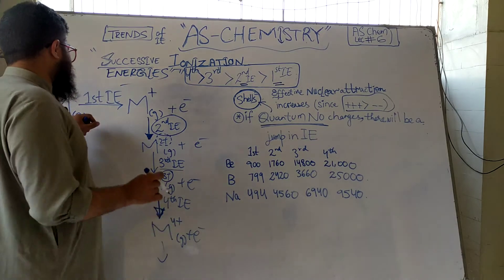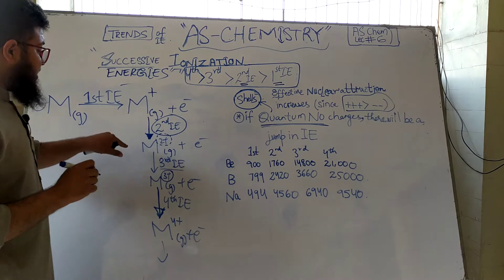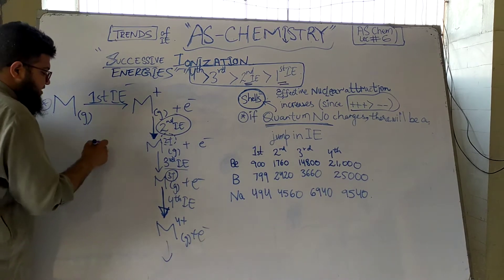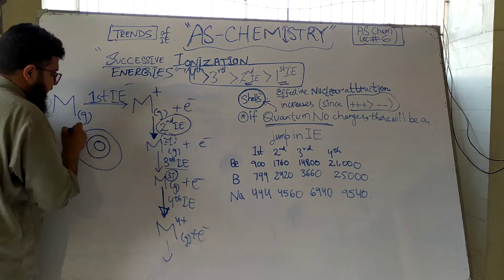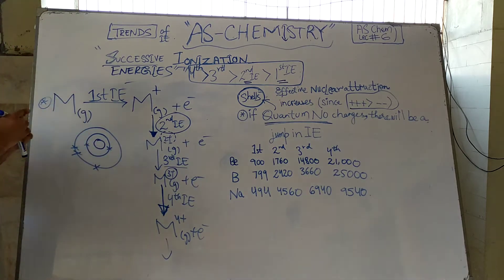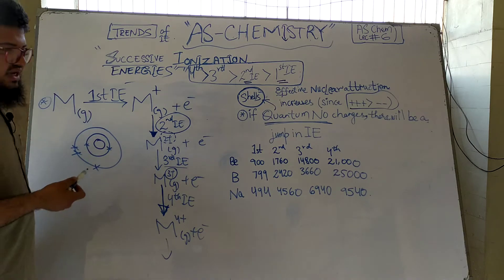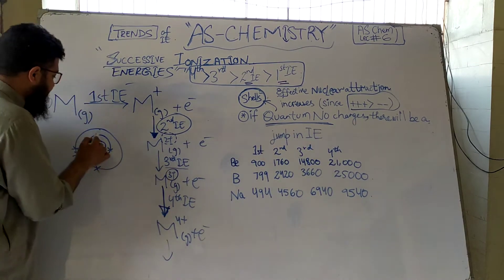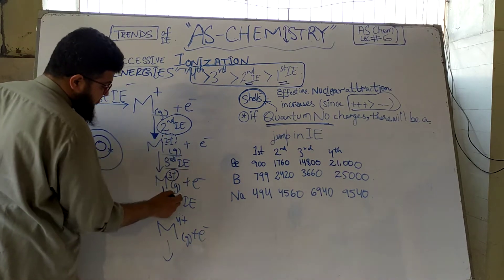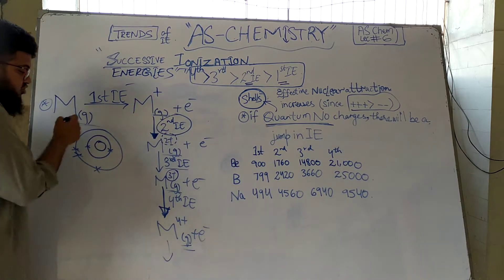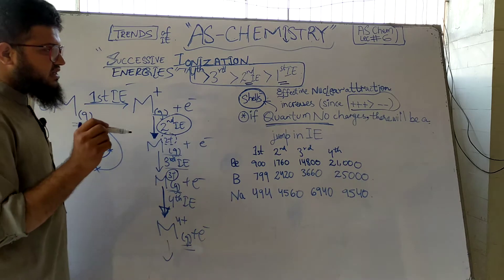Now let me explain the basic trend through a diagram. Consider a nucleus with a first shell and a second shell. We have two electrons in the first shell and three electrons in the second shell — five electrons in total. The proton number of this atom is five. Remember, the states of all these atoms and ions must be gaseous; they cannot be liquid or aqueous.